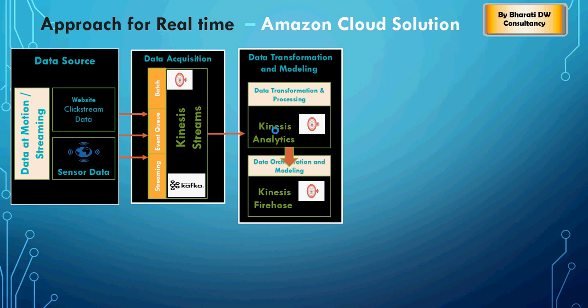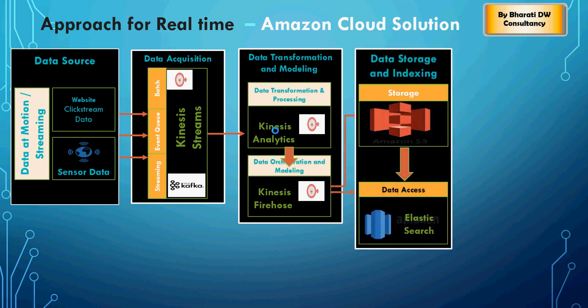Kinesis Analytics has the capability to understand the data and write SQL queries on the data set. I'm going to show you how to discover schema — we need to understand what kind of data is coming in, and then you can write real-time SQL statements on Kinesis Analytics. Then you would see how Firehose is about data orchestration, pushing this data to an S3 bucket for storage, or Elasticsearch for analytics and visual applications.